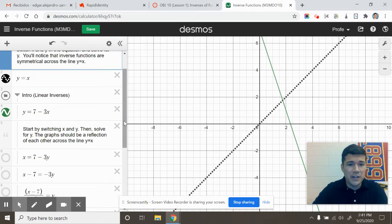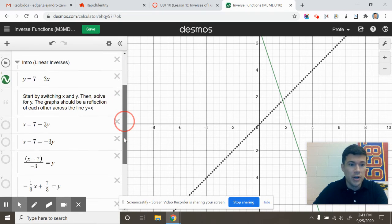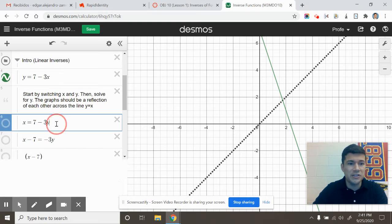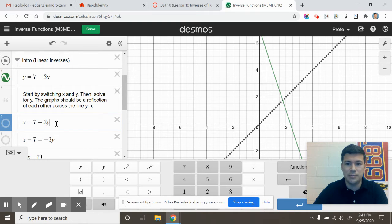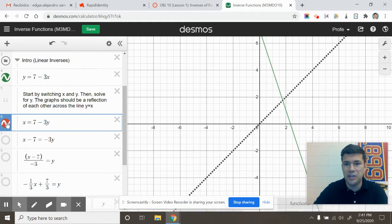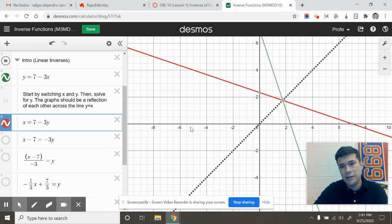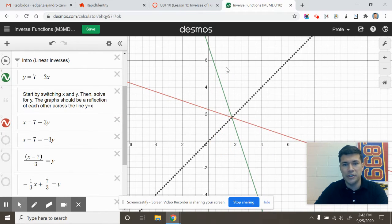So if I'm going to find its inverse, its inverse function, I'm going to start first, and this is true with any type of inverse type of function. I am simply going to switch the x's and the y's. So here it goes, x equals 7 minus 3y, which Desmos will actually graph for me. And there you can see the graphical relationship. You see the symmetry.